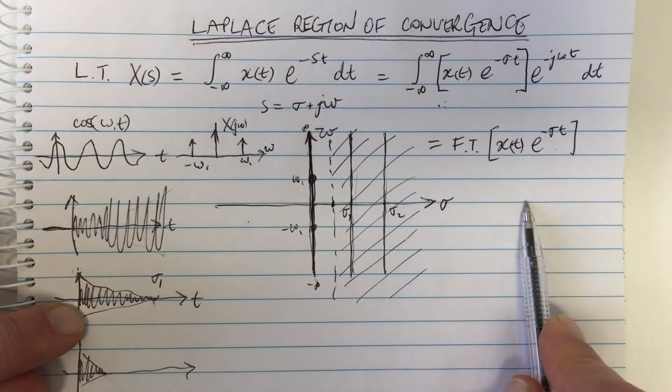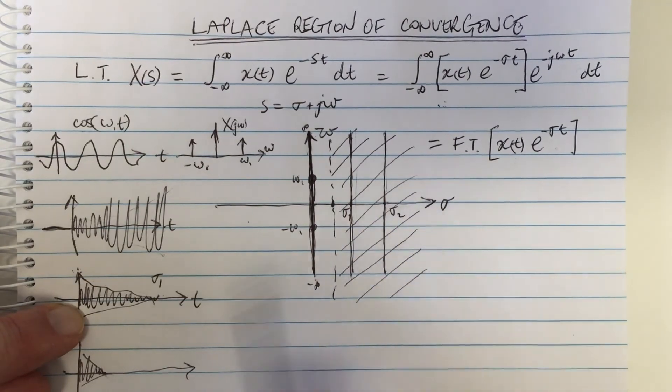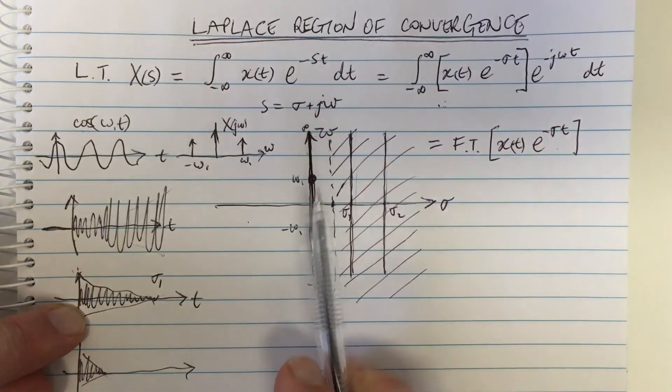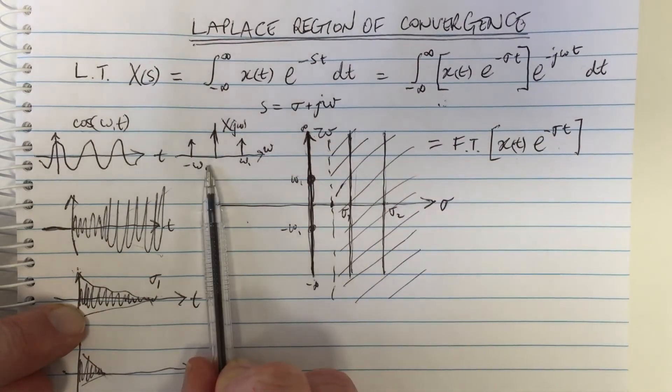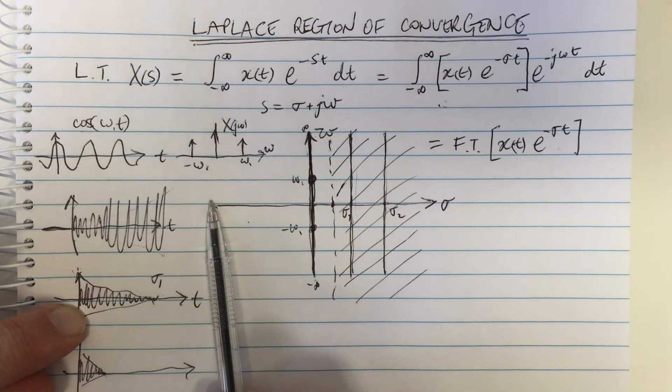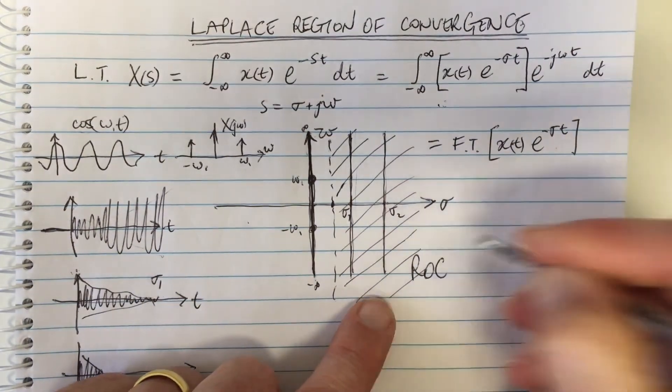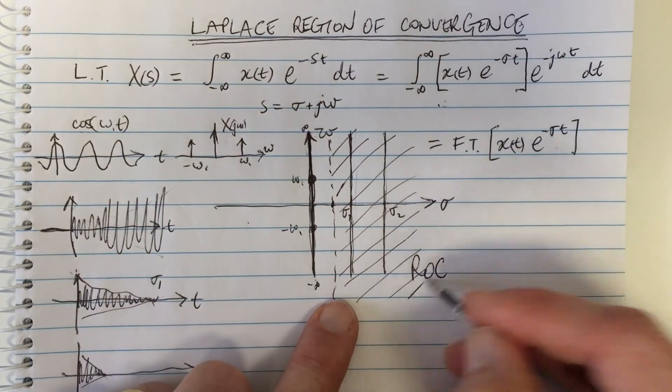So for all these values of sigma, you will be able to work out the Fourier transform. And for all the values below that, and more negative, you won't be able to. And so this is called the region of convergence for the Laplace transform.